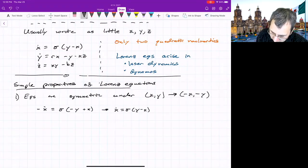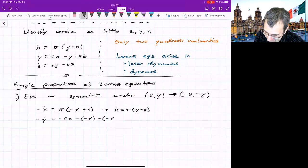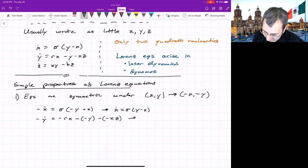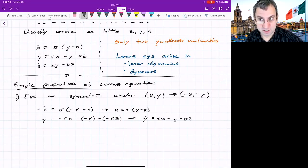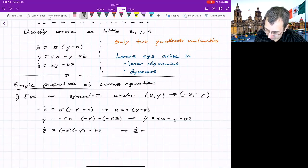So the first equation doesn't change. What about the second one? Negative y dot equals negative rx negative negative y, and then negative negative xz. Just divide by negative one, and you'll get that that doesn't change. We're not changing z. Z still stays z. And then z dot doesn't change, but because we've got negative x times negative y, and then something that's just a function of z, well, then this doesn't change.